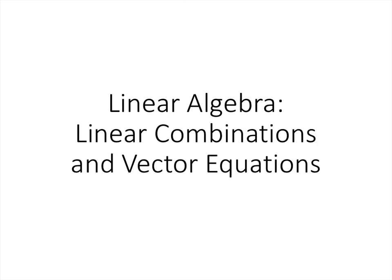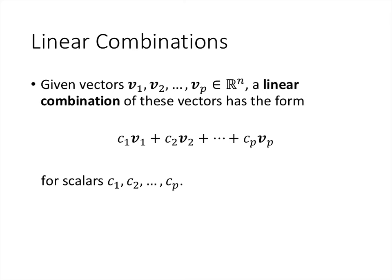If you have some number of vectors in Rn — column vectors with n entries — the subscript p indicates how many we have: v1, v2, all the way up through vp. A linear combination of those vectors is simply a sum of scalars times those vectors: c1 times v1, c2 times v2, all the way through cp times vp. We take all those scalar multiplication results and add them together — that's what we call a linear combination.